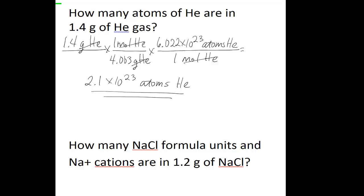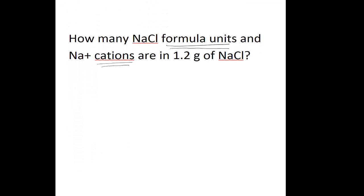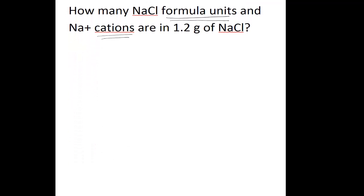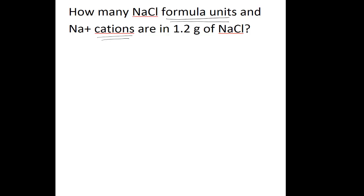One more type of problem: you can also use Avogadro's number to look at the number of formula units, which is how we express ionic compound ratios of different elements. You can also look at the number of cations or anions. The problem says: how many sodium chloride formula units and sodium cations are in 1.2 grams of sodium chloride?